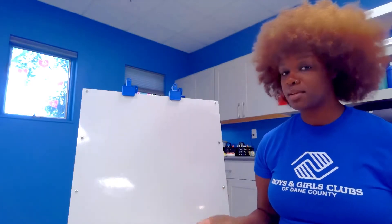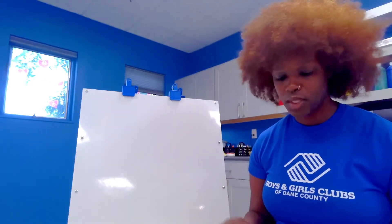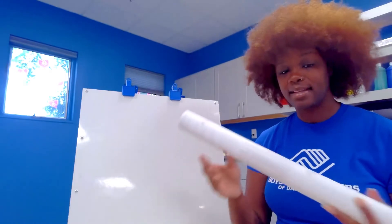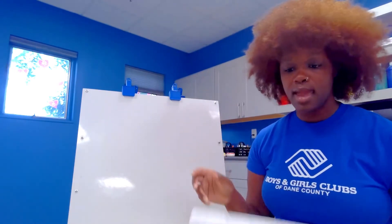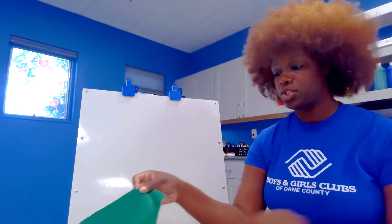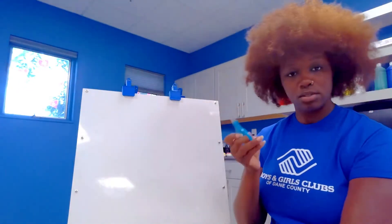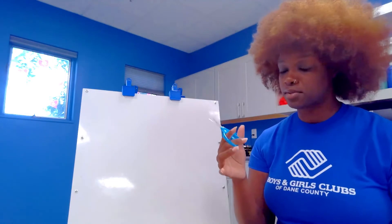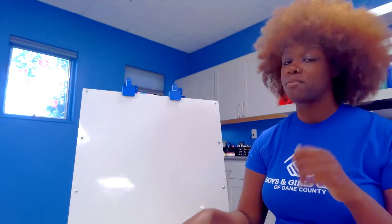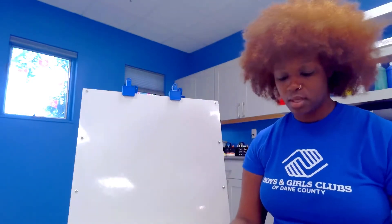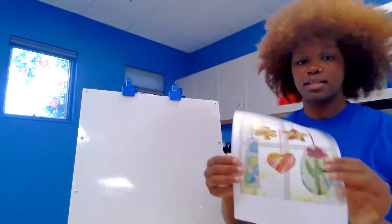So I have my contact paper, I have some tissue paper, and I have my scissors because we're going to be working on fine motor skills. Or you can rip it with your fingers if you don't want to use the scissors.